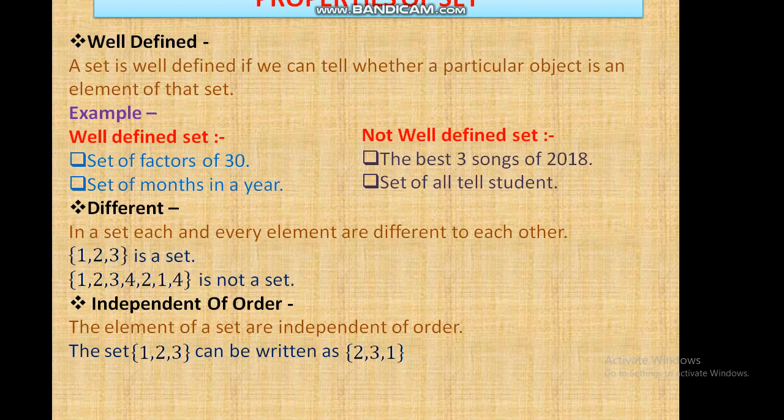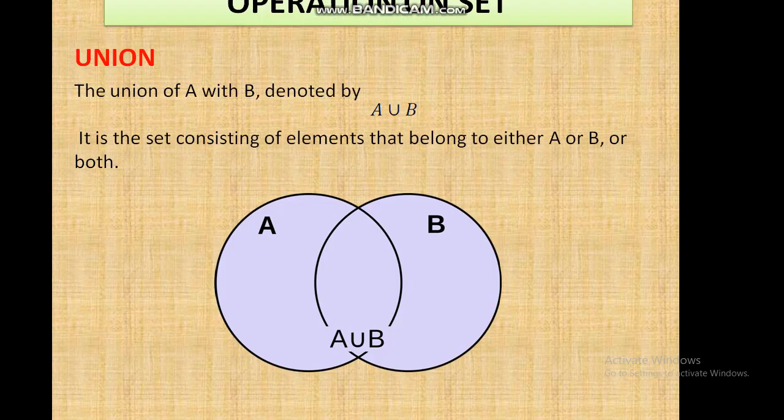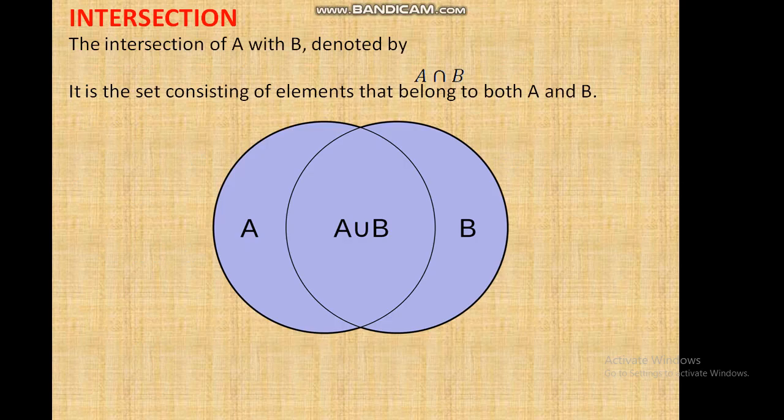Operations on sets: Union – The union of A and B is denoted by A ∪ B. It is the set consisting of all elements that belong to either A or B or both.